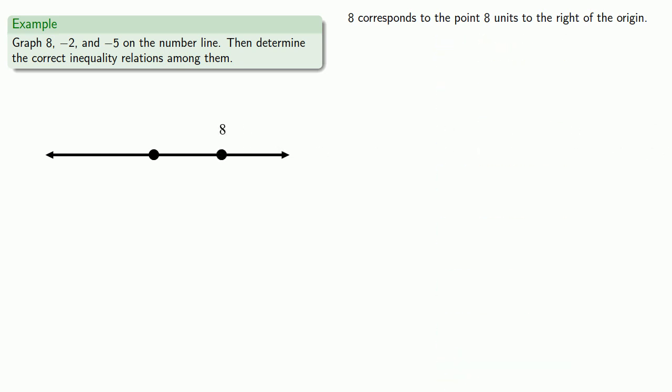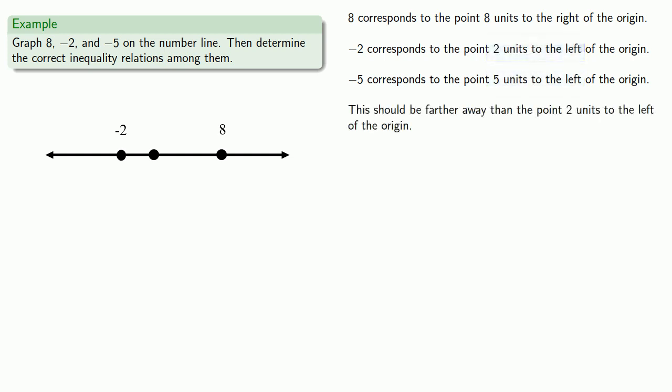Minus 2 corresponds to the point that's 2 units to the left of the origin. And finally, minus 5 corresponds to the point 5 units to the left of the origin. Now since 5 is greater than 2, this point should be farther away than the point that's 2 units to the left of the origin.